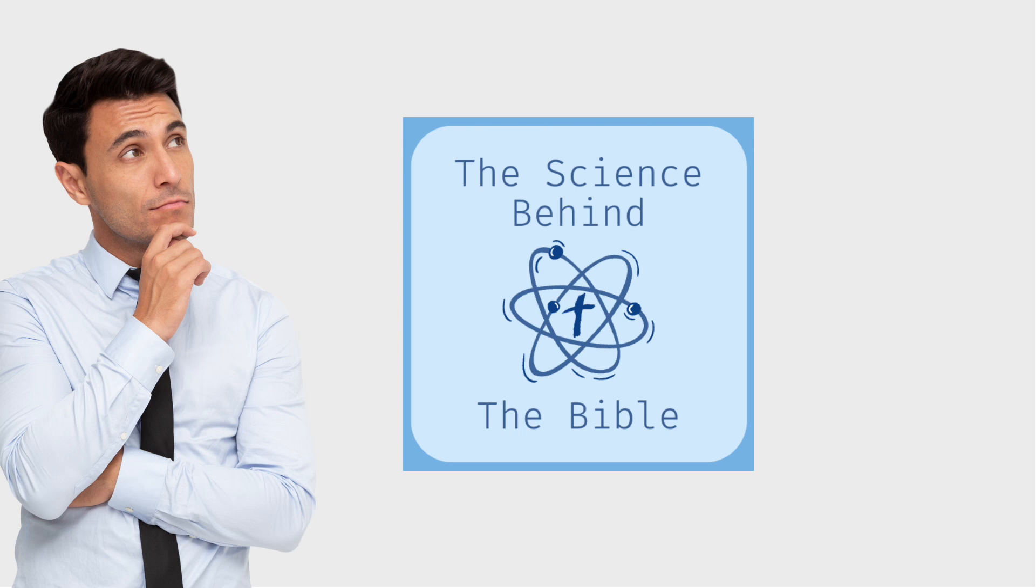And it says here in Ecclesiastes that I saw that all that God has done, and nobody can understand what God does here on earth. No matter how hard a person tries to understand it, he cannot. Even if a wise man says he understands it, he really cannot. No one can really understand. And sometimes there's things that just God allows to happen that we can't understand. And yeah, we have free will, but sometimes God just allows things to happen. And it's out of our control at some point.